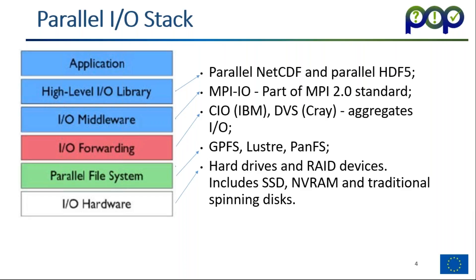Underneath the I/O middleware you have I/O forwarding — these exist as daemons on the compute nodes and they aggregate I/O. Underneath the I/O forwarding system you have your actual parallel file systems such as GPFS, Lustre, and Panasas. And underneath your parallel file system at the very bottom you have your hard drives, RAID devices, which could include SSDs, VRAM, and traditional spinning disks.